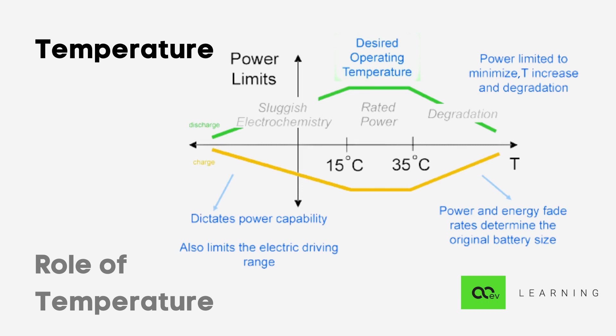You can see in the graph variation of power with temperature. Below 15 degrees Celsius the electrochemistry becomes sluggish and power drops down as well as resistance increases.